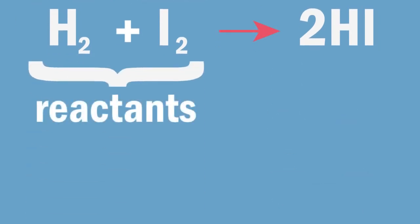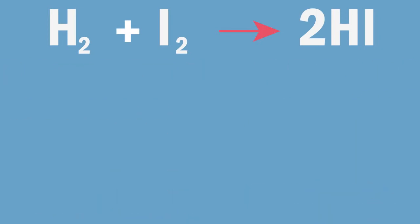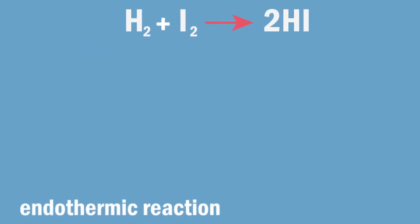The reactants are what react and are on the left hand side of the arrow in the equation. The products are what are produced in the reaction and are on the right hand side of the arrow in the equation. We can represent what happens in this reaction by the diagram.